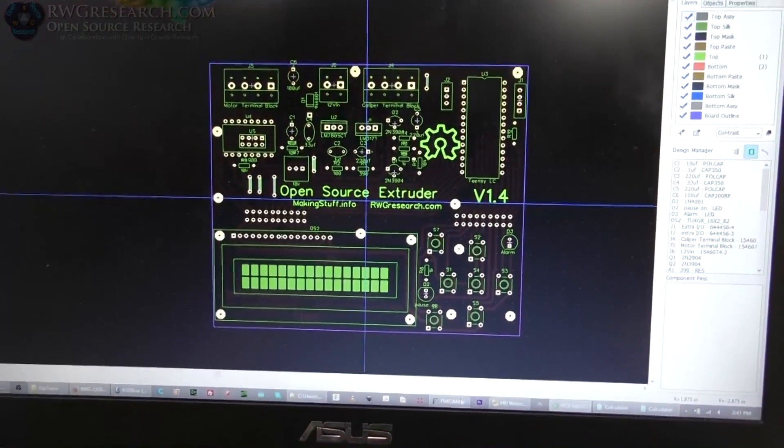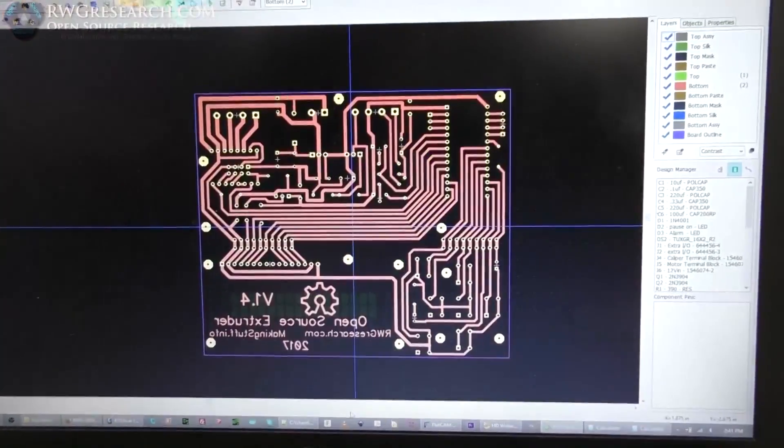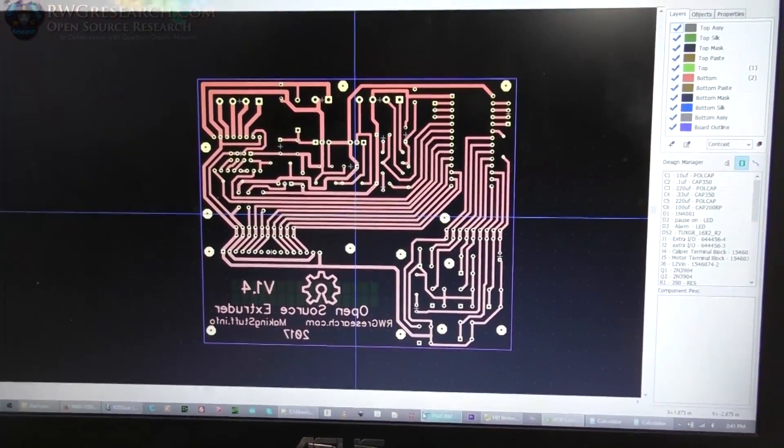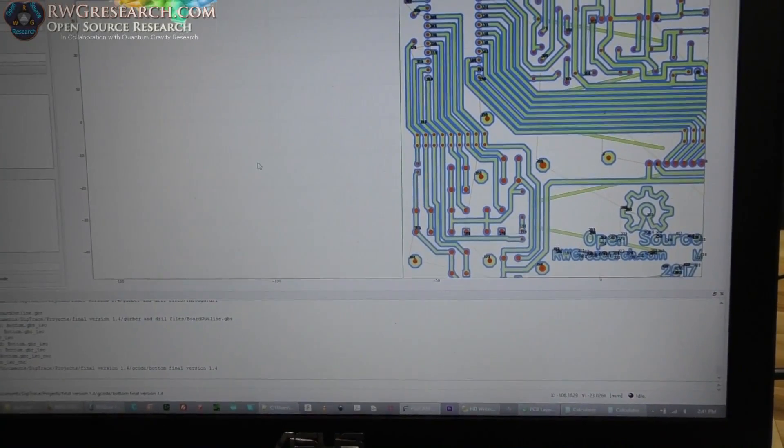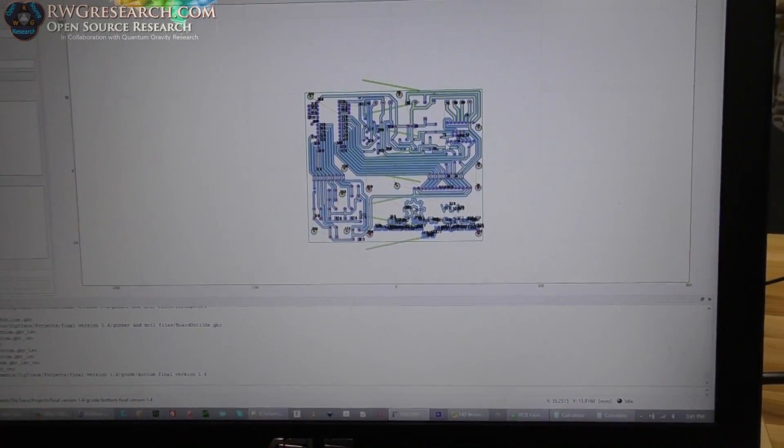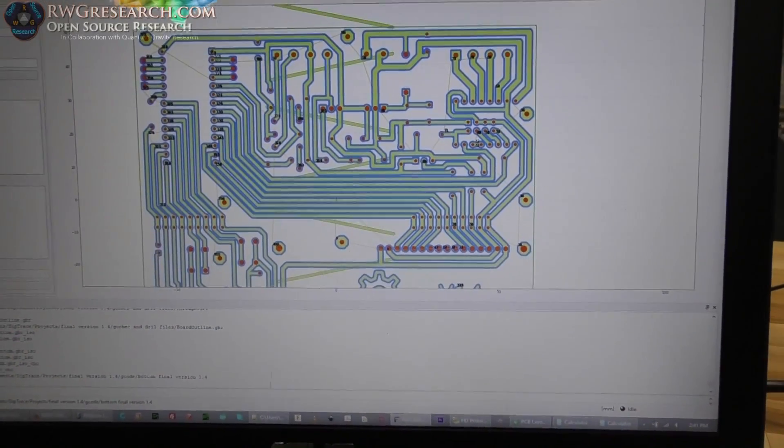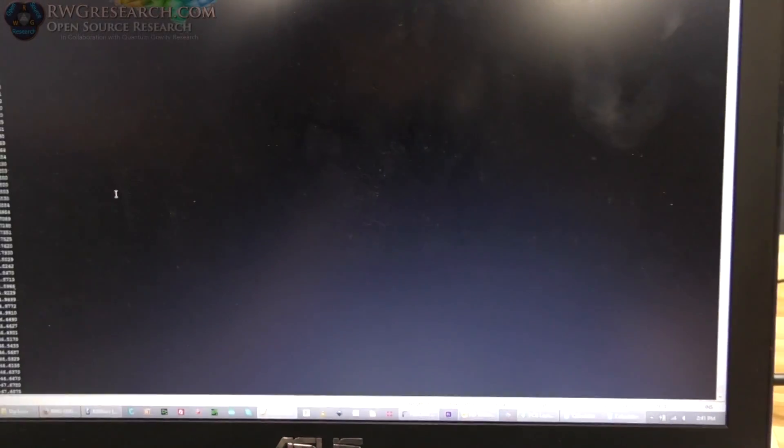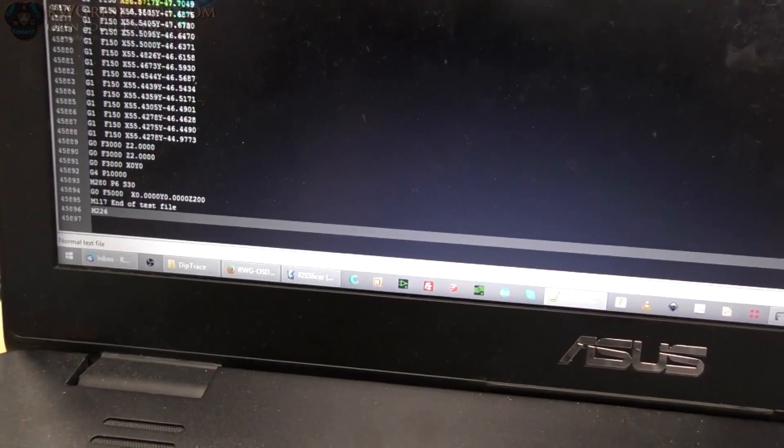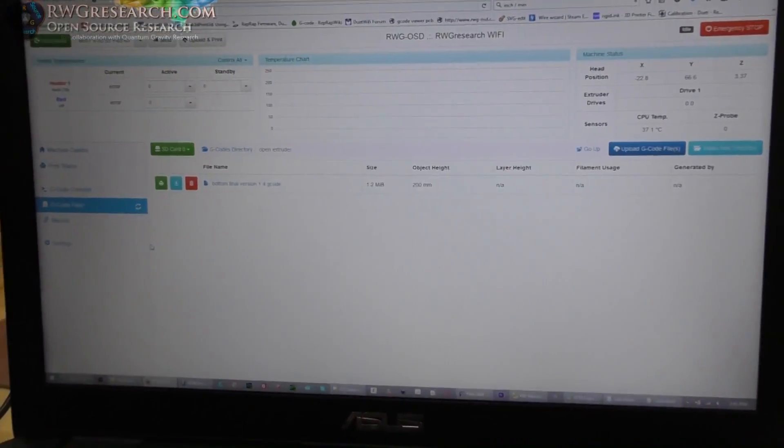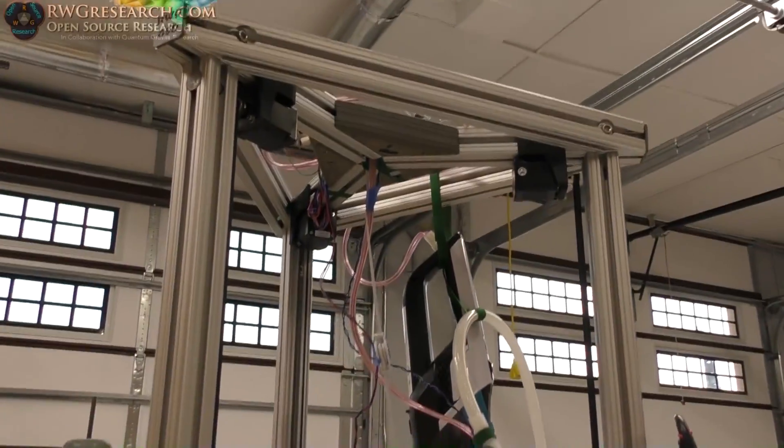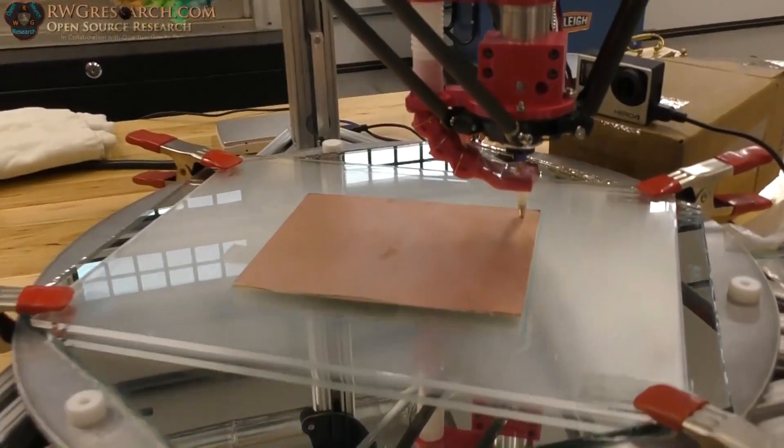Alright, so we've taken this file, made the traces from the schematic and we exported that into flat cam and we've generated the necessary g-code, all 45,000 lines of it, edited what we needed, and we have put it on the printer.